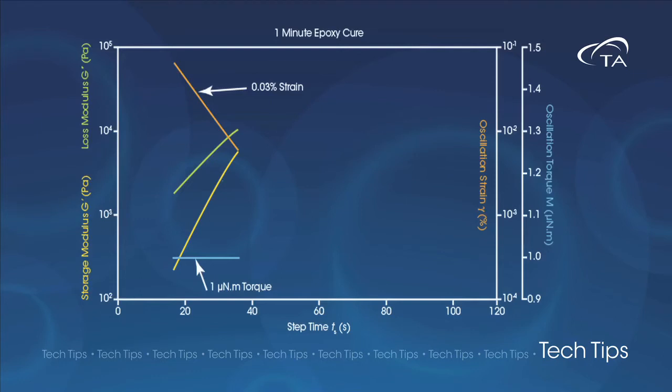At the beginning of the experiment, the viscosity is low. By using non-iterative sampling, the strain is increased to achieve the minimum torque, producing better data.